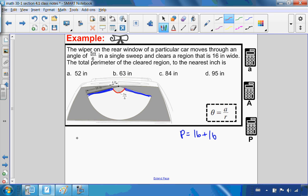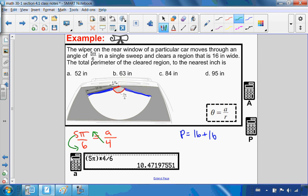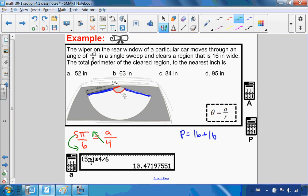Let's start with the little arc length. Using my formula, theta equals A over R. The angle that it moves through is 5π over 6, and that equals my little arc length over my radius. This little arc length has a radius of 4 inches. I'm going to cross-multiply and divide. So 4 times 5π divided by 6, and I get 10.5.